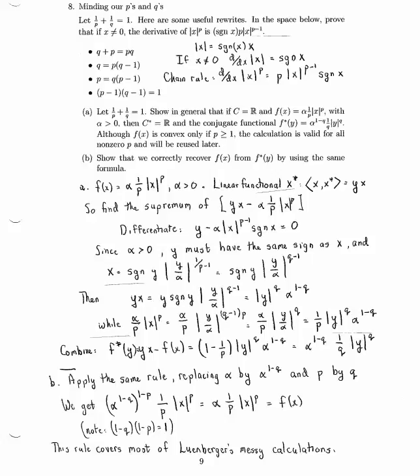Well, this alpha to the 1 minus q has to be raised to the 1 minus p power. 1 over q absolute of y to the q gets replaced by 1 over p absolute of x to the p. But 1 minus q times 1 minus p is 1. We get back alpha times 1 over p times absolute value of x to the p. And recover our original f of x.